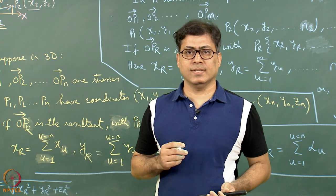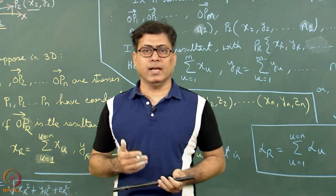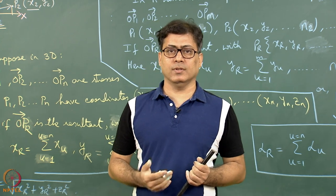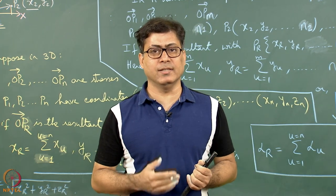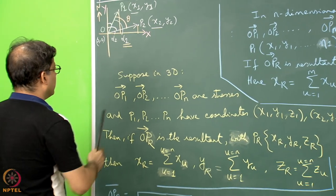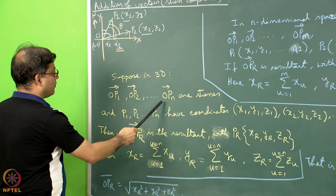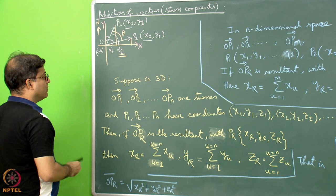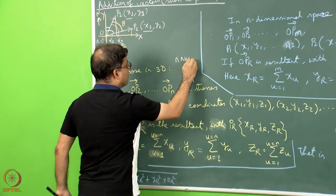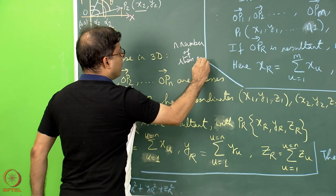We have seen how stresses can be represented in 2D coordinate geometry, and how when two stresses act on a point the resultant can be found. The same process can be extended to three-dimensional coordinate geometry and also to n-dimensional space. Consider that in 3D, OP1, OP2, and so on up to OPn are the stresses acting, so we are considering n number of stress components.